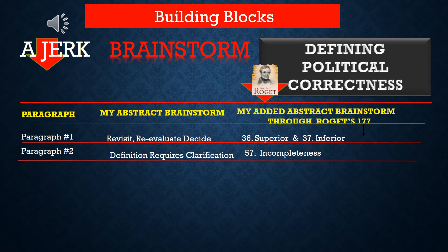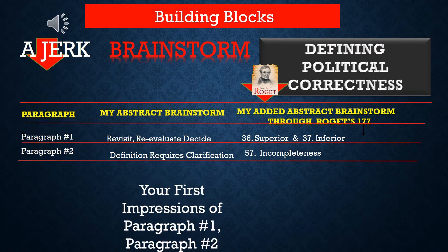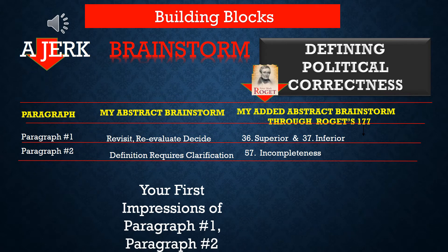You're going to see we've added paragraph 2, and we're going to evaluate what we think our own interpretation of the meaning of the abstract concepts the author was trying to reach in paragraph 2. We're going to chart our progress, then go through and add our brainstorming session in Roger's 177, putting number 57 incompleteness in our chart.